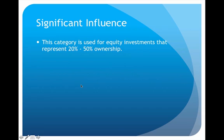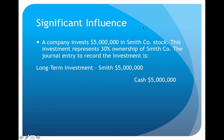Moving beyond the less-than-20% category — what if we buy stock and end up owning 20 to 50 percent? A 20 to 50 percent ownership represents a significant influence over the company. In this example, we're going to invest five million dollars in Smith Company, which represents 30 percent ownership. That puts us in the significant influence category, so I will debit long-term investment in Smith for five million dollars and credit cash.